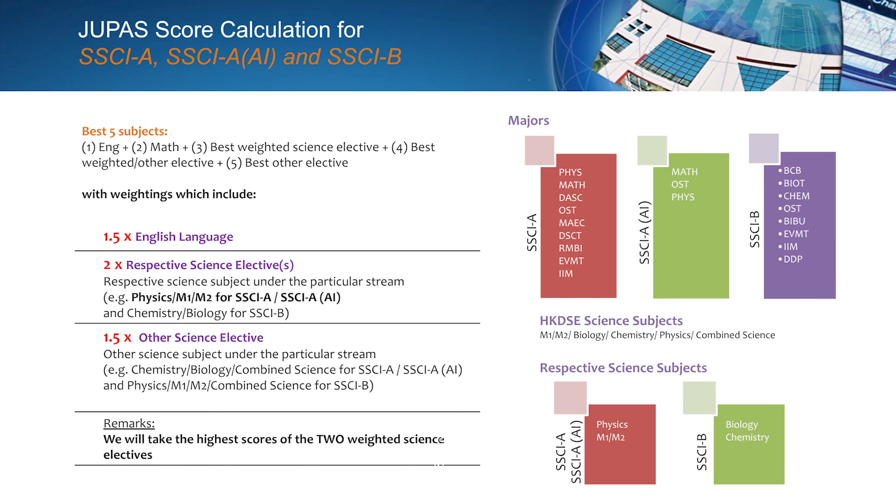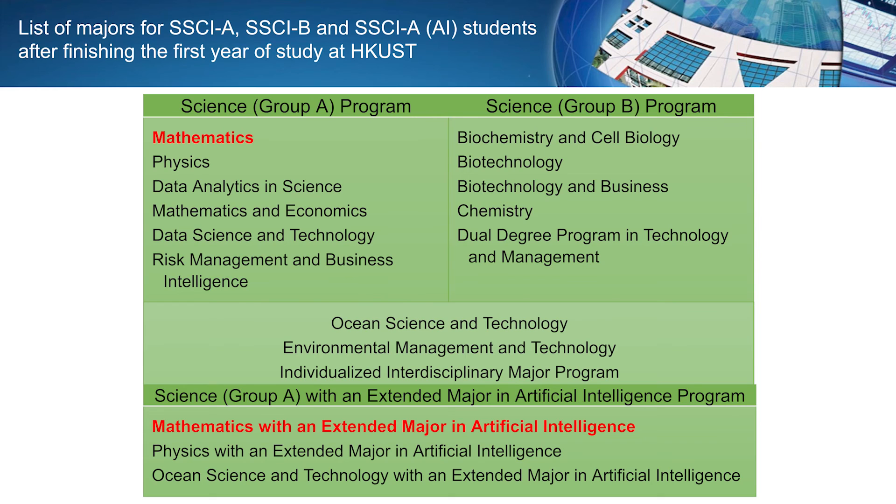They may have different weightings. We count the best five subjects in your DSE, and then for some subjects, we multiply by 1.5, and for some others, we multiply by 2, according to the table here. Let me remind you once again, if you want to major in math, you should choose Science Group A program, or the Science Group A plus AI program in your JUPAS applications.